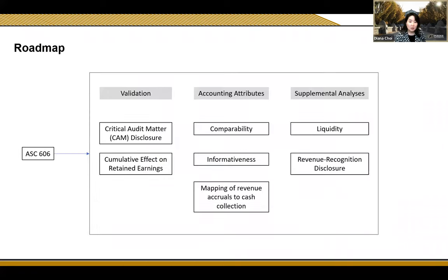Here is a quick overview of our paper. After discussing ASC 606 in more detail, I'll discuss how we validate our treatment and control groups by looking into critical audit matter disclosure and cumulative effect on retained earnings. Then I will discuss the accounting attributes that we find, and lastly move on to the liquidity and revenue recognition disclosure from our supplemental analysis.